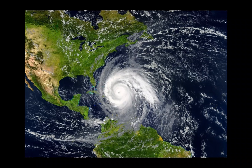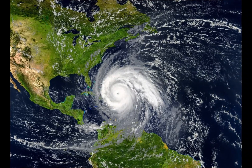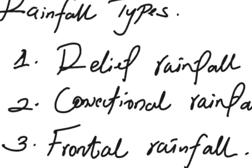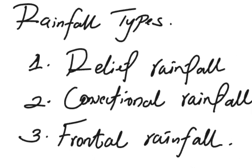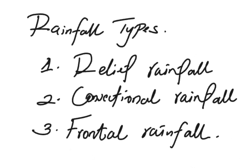This is an example of a cyclone being formed. So these are the three types of rainfall we have covered in this video. Thank you for watching.